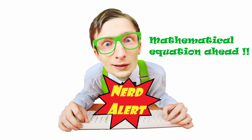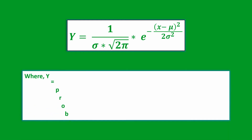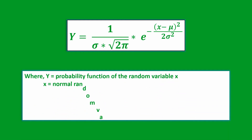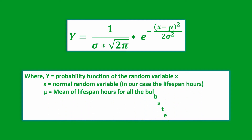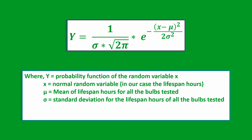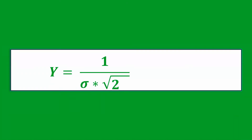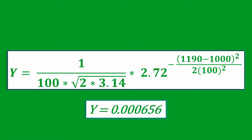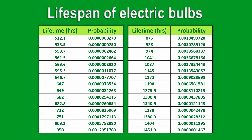The most used continuous probability function is the normal distribution function, depicted by the following formula, where y is the probability function of the random variable x. X is the normal random variable — in our case, the lifespan hours. Mu is the mean of lifespan hours for all the bulbs tested. Sigma is the standard deviation for the lifespan hours of all the bulbs tested. E is approximately equal to 2.72, and pi is approximately equal to 3.14. Taking one value, 1190, from the table and replacing each value in the equation, we get a probability of 0.000656. If we calculate the probabilities for the full table, we get the following probability distribution, and when we plot them, this is what we get.